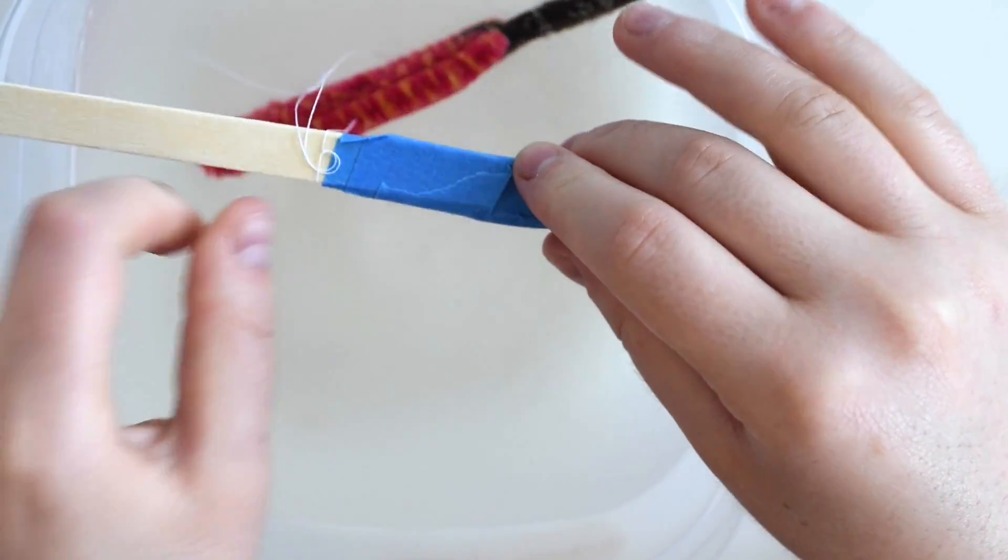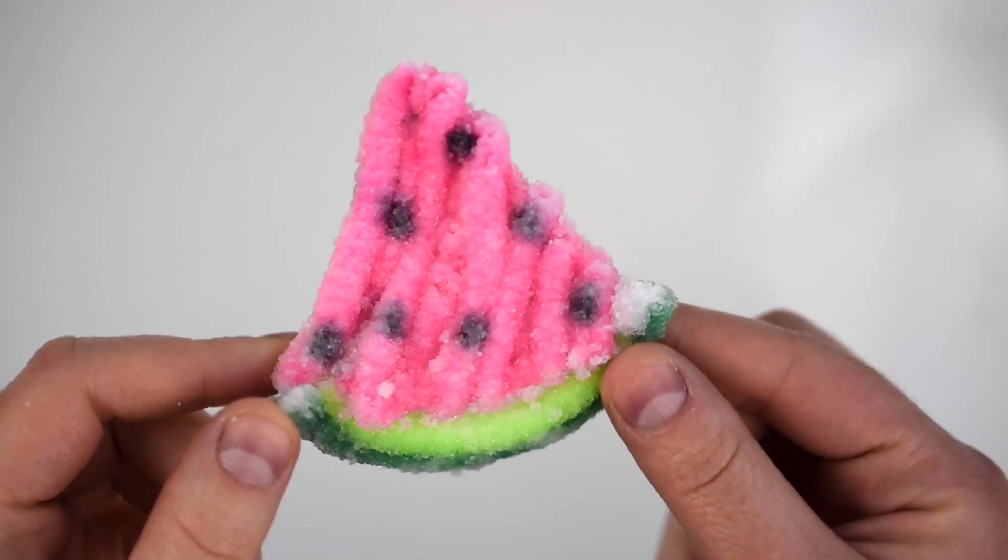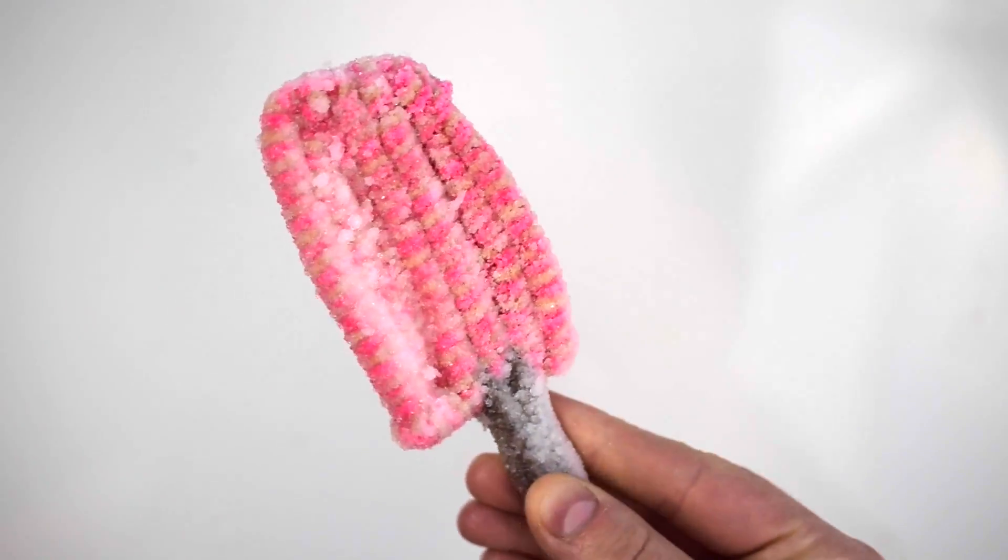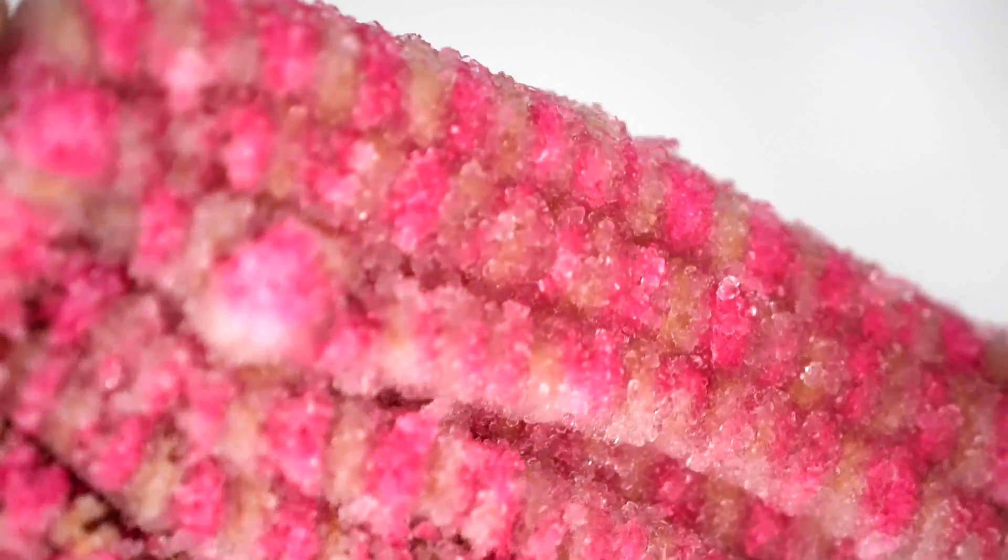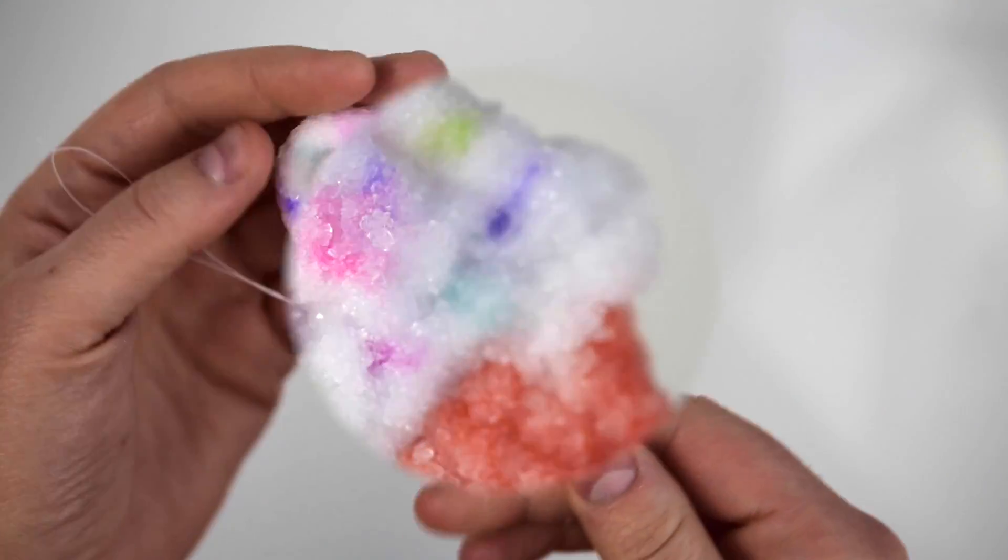I used popsicle sticks that I just taped together. Then all you have to do is wait. I left mine in for about 10 or 12 hours, and then once I took them out, they had turned into adorable crystallized summer treats, perfect for hanging in a window or displaying as summer room decor.